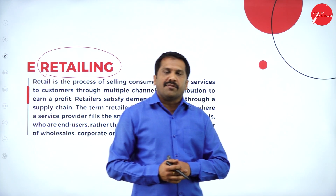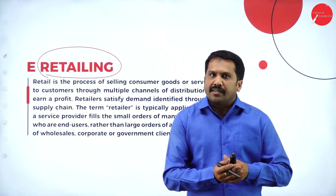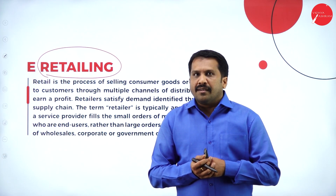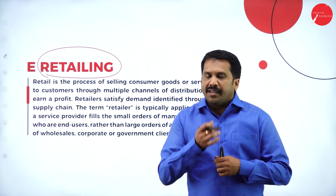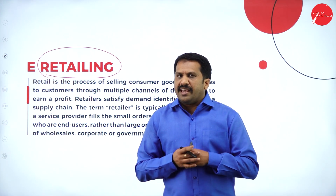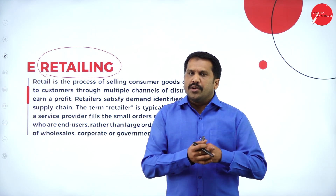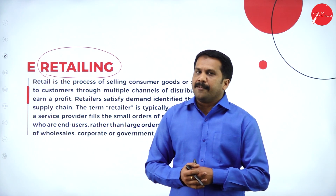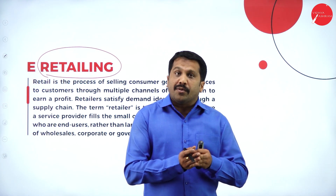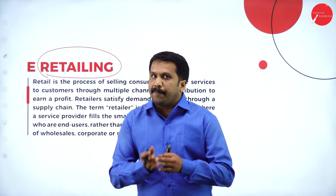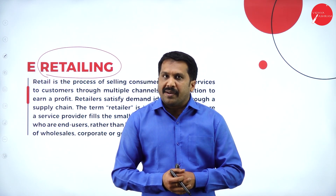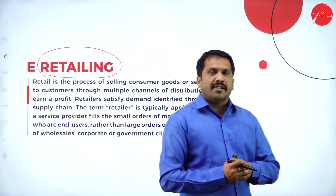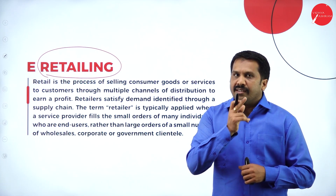Sub-dividing means, for example, if you want to buy a Samsung phone, is it necessary to go to a Samsung showroom? Earlier the answer was yes. But now it is not required. If you go to any mobile shop, you will get Samsung, Oppo, iPhone, and other kinds of mobiles — more than 10 branded mobiles. Similarly, if you go to a watch shop, you will get Fastrack, Fossils, Sonata, and many types of watches in one shop.